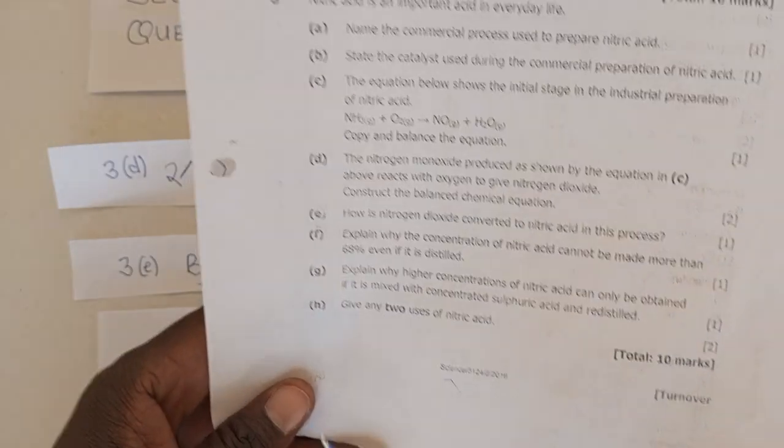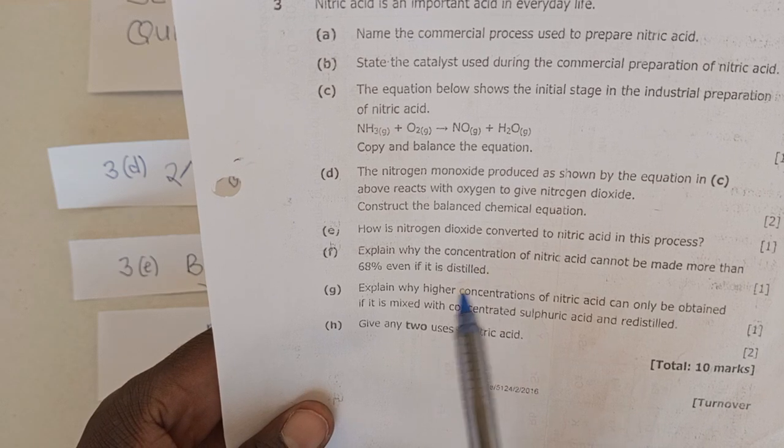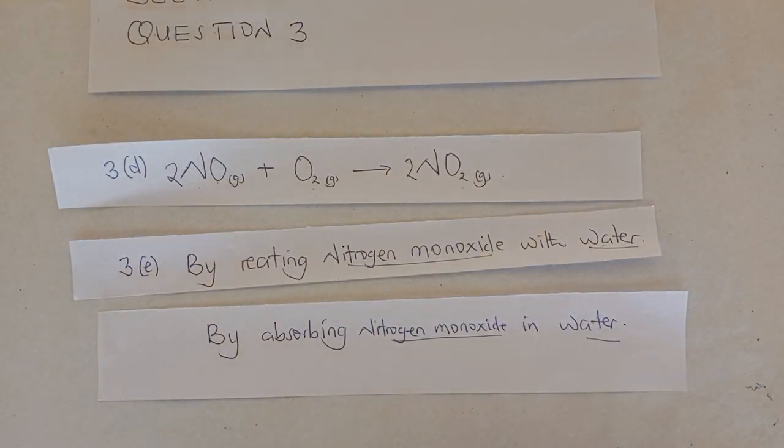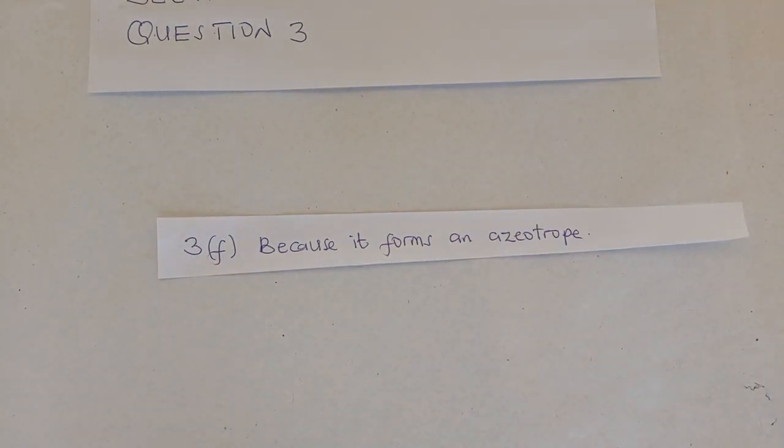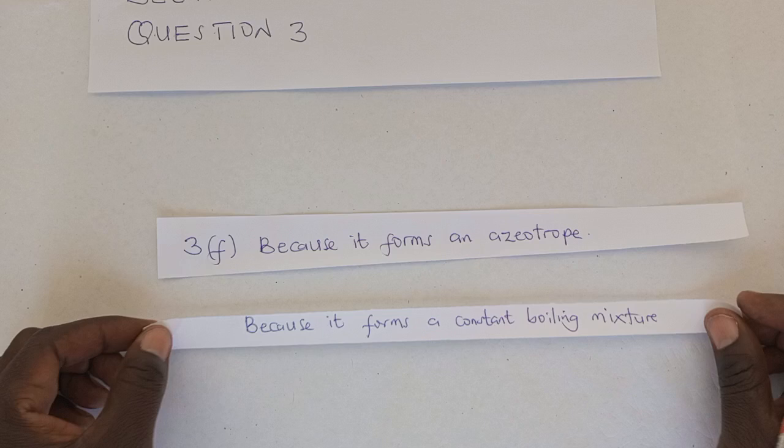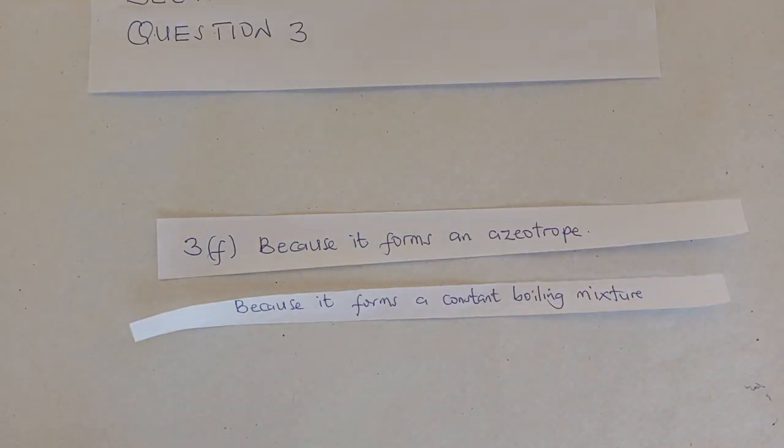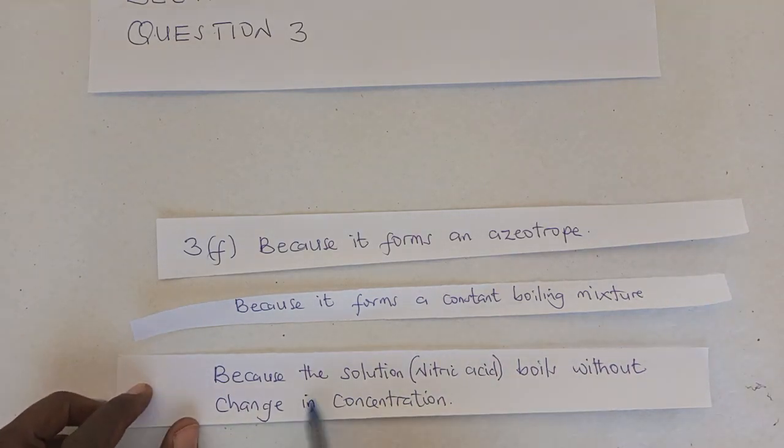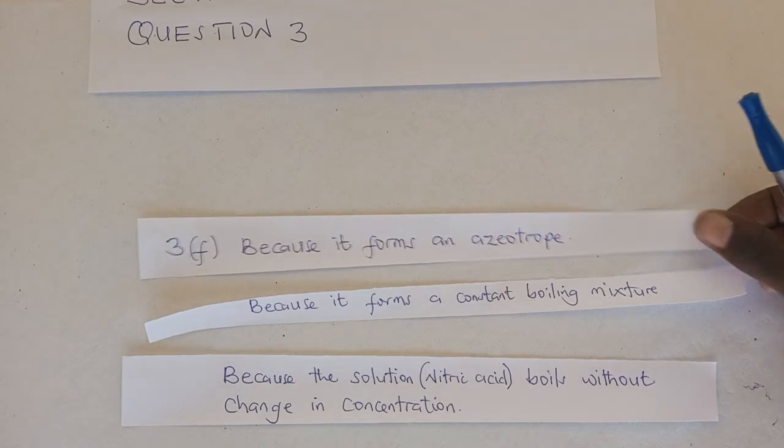And we go to question 3F. Question 3F says: explain why the concentration of nitric acid cannot be made more than 68%, even if it is distilled. Remember that aspect where I was talking about the azeotropic behavior of nitric acid? And so we'll say because it forms an azeotrope. That is the reason why it does not go beyond 68%. If you want to write in a different way, you can say because it forms a constant boiling mixture, because an azeotrope is a constant boiling mixture. If you feel that one is not comfortable, you may go with this one which says because the solution of nitric acid boils without change in concentration. This gives you a mark if you were to write any of this.